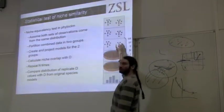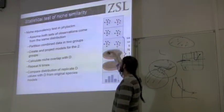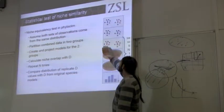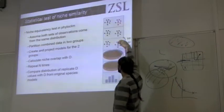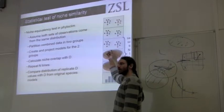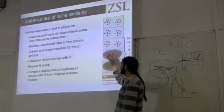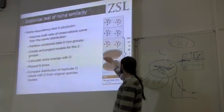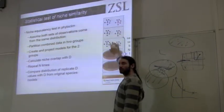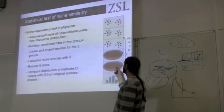All the black dots now become species 1, and all the red dots now become species 2. We then build new models for the red species and the black species, and we project them into our geographic space, and we use the D and the I statistic to measure the similarity for these random partitions.